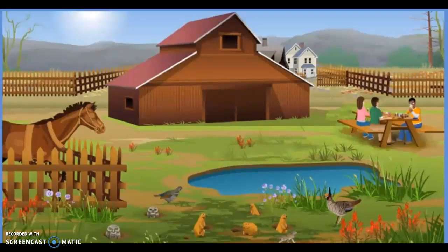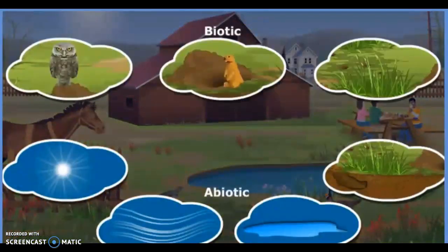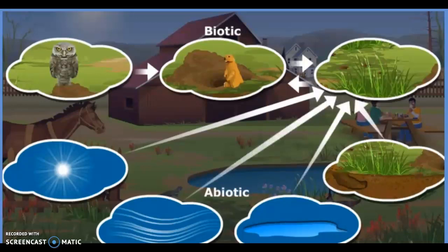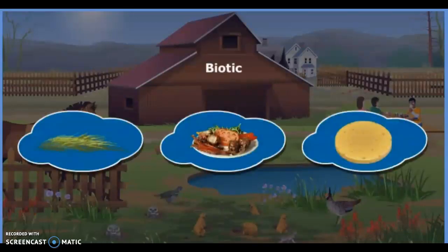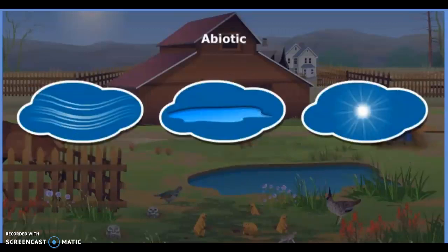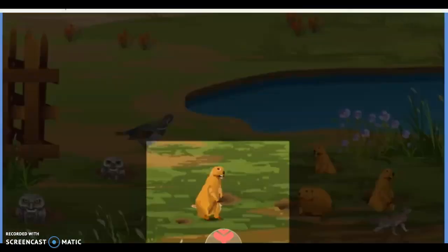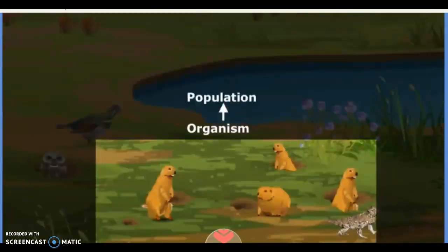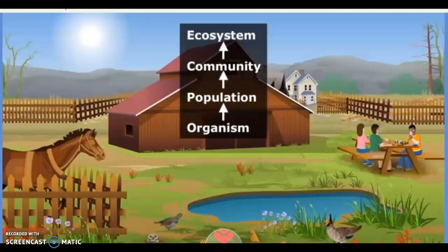Today we learned that an ecosystem is made up of abiotic and biotic components that constantly interact with each other. Biotic components are either living, once living, or a product of living things. Abiotic components have never been alive. The structural hierarchy within an ecosystem in ascending order is organism, population, community, and ecosystem.